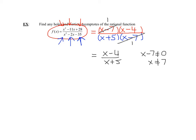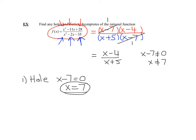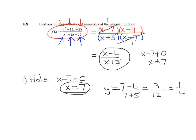Remember, the step said that if a factor in the denominator totally reduces, you're going to have a hole. So there is a hole where x minus 7 equals zero, or when x equals 7. To find the coordinates of the hole, we know the x-coordinate is 7. To find the y-coordinate, plug 7 into the reduced function: 7 minus 4 over 7 plus 5 equals 3 over 12, which is 1 fourth. Therefore, the coordinates of the hole are (7, 1/4).